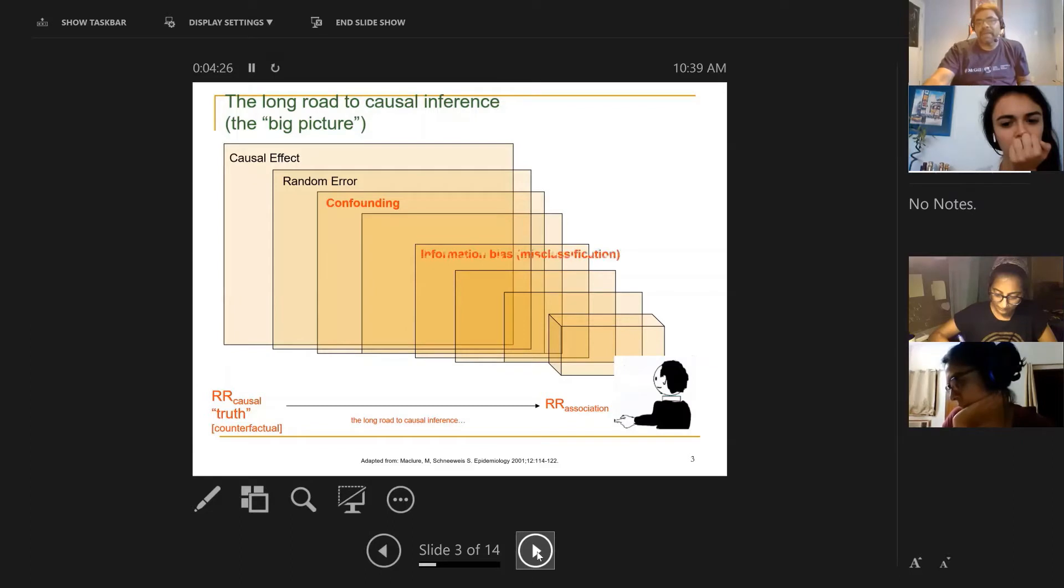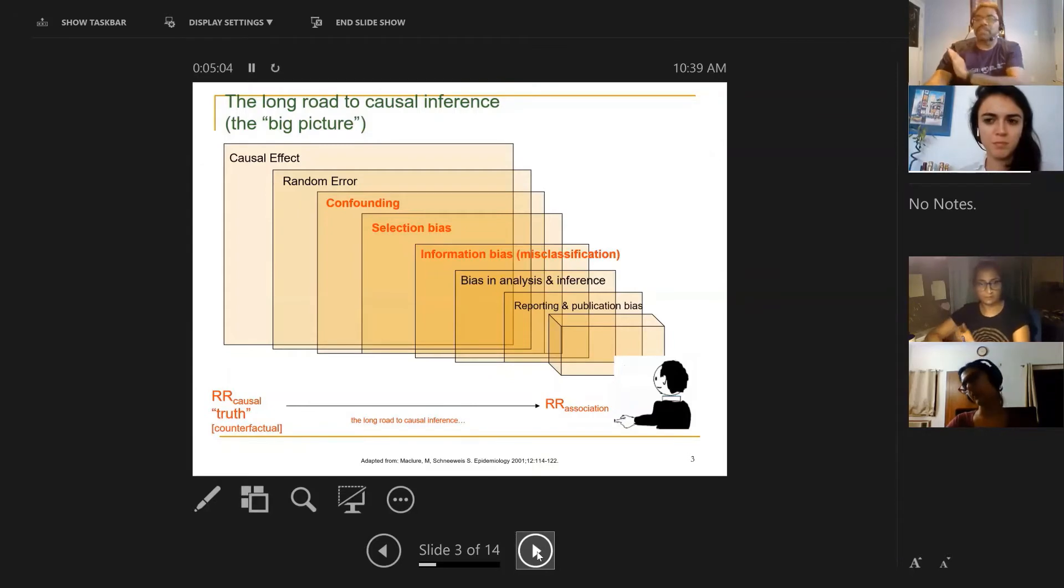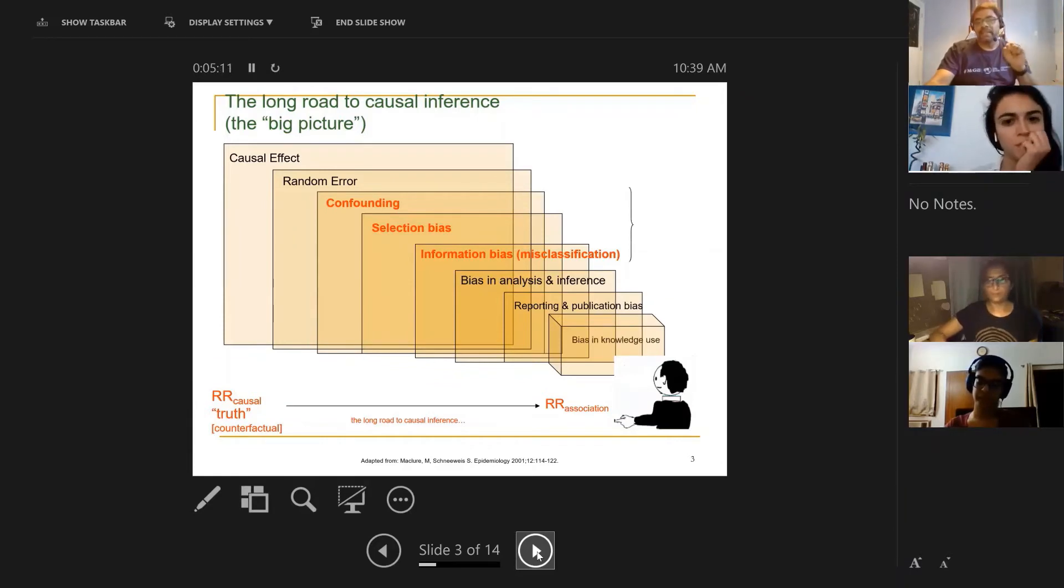Even if you solve random error, you're still left with confounding, selection bias, and information bias. These three things together is called bias, and all of them systematically take us away from the truth. Random error can sometimes overestimate, can sometimes underestimate. It is inherently unpredictable. Random error we can live with because it's not systematic. It doesn't push us deliberately in one direction; it just makes the measurement more noisy.